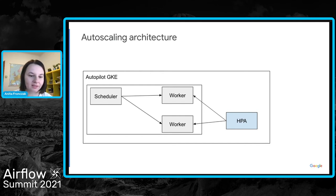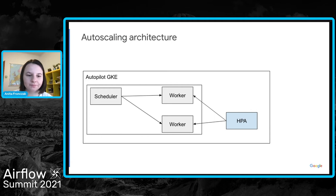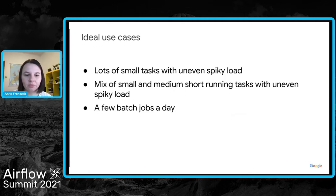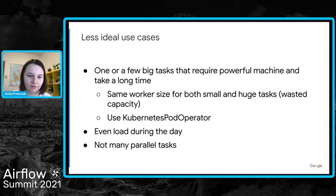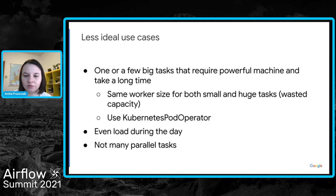Here is a simplified architecture for the auto scaling solution. We still have one scheduler pod; the number of worker pods is dynamic and varies depending on task load, controlled by the Horizontal Pod Autoscaler. The cluster is managed by GKE Autopilot. This implementation supports use cases like varying load during the day with a mix of small and medium tasks, and a few batch jobs a day with no work in between. It does not support large machine-learning tasks requiring huge machines for a few hours — in that case, use the Kubernetes Pod Operator with a machine created especially for the task.